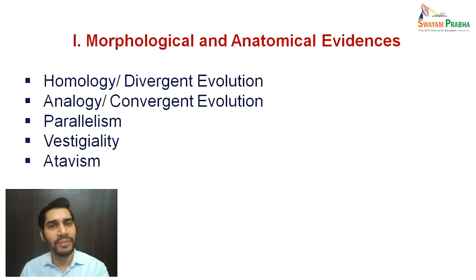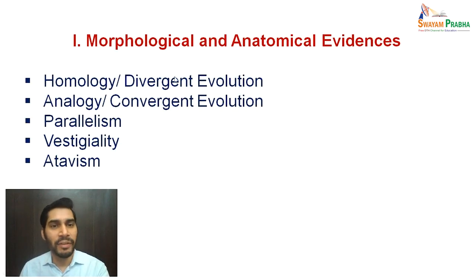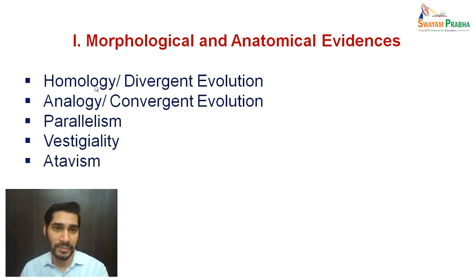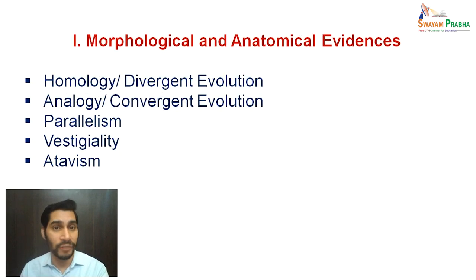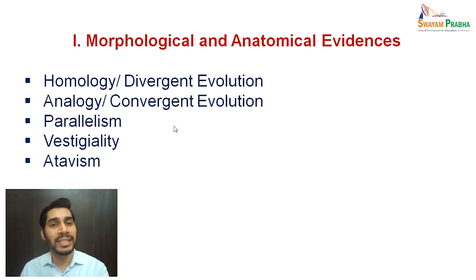Starting with the first one, which is morphological and anatomical evidences. Under this, we will discuss the homology of structures, or homologous structures, which represent divergent evolution. We will proceed to analogous structures, which represent convergent evolution. Then we will go to parallel structures, which represent the phenomena of parallelism. Then the vestigial organs, or vestigiality, followed by atavism. We will discuss how all these prove the theory of evolution.